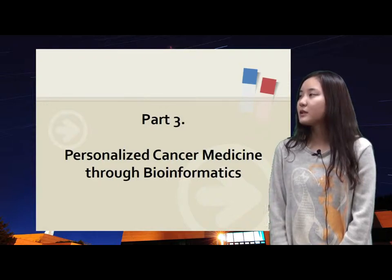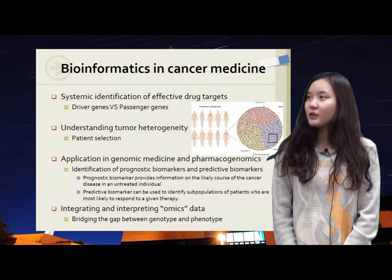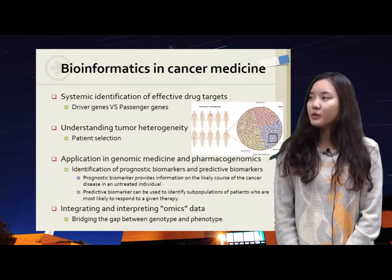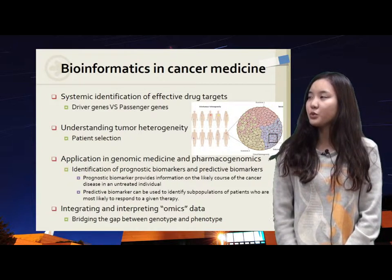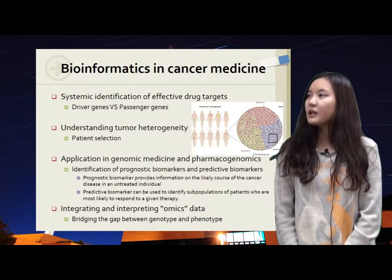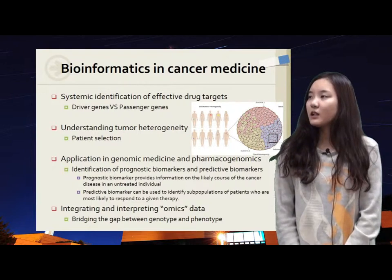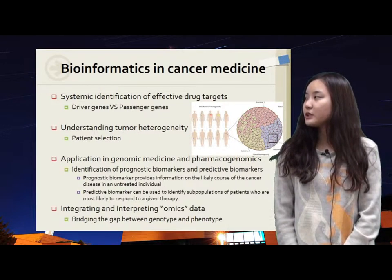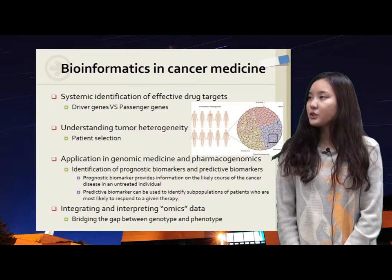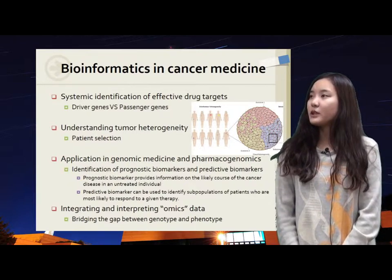Part 3 is about personalized cancer medicine through bioinformatics. The roles of bioinformatics in cancer medicine include: first, systematic identification of effective drug targets, where the important thing is knowing driver genes — the root gene of overall mutation. One limitation of traditional target identification is that differences in gene expression level cannot discriminate driver genes from passenger genes. Secondly, understanding tumor heterogeneity enables new taxonomy of cancer related to patient selection. Single targeted drugs cannot eradicate tumor no matter how well designed, due to tumor heterogeneity.